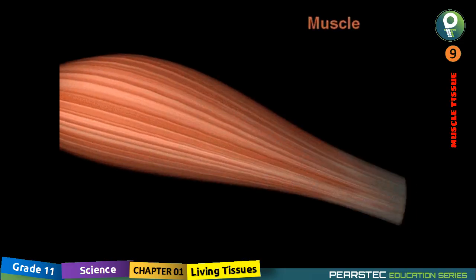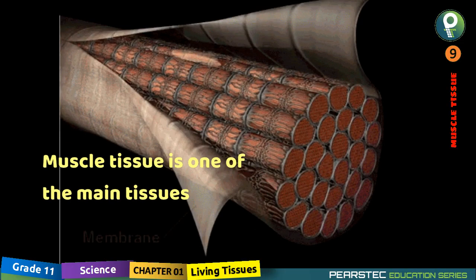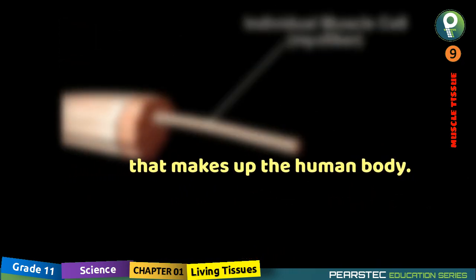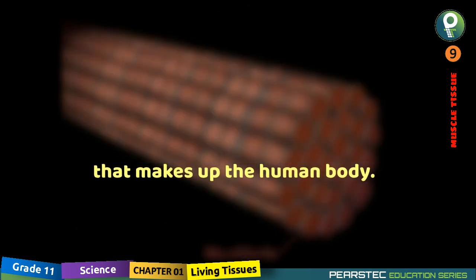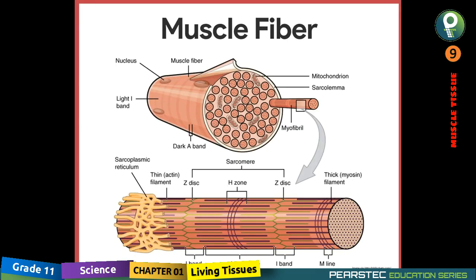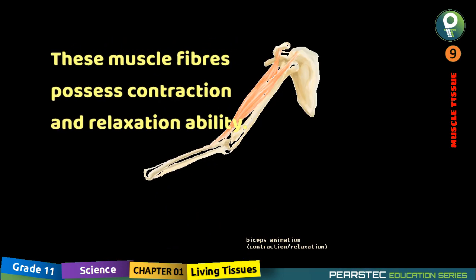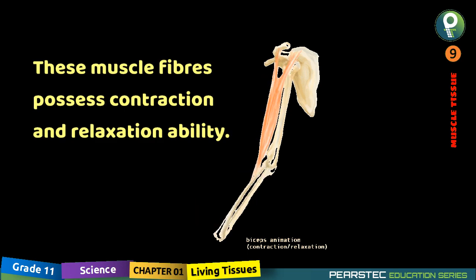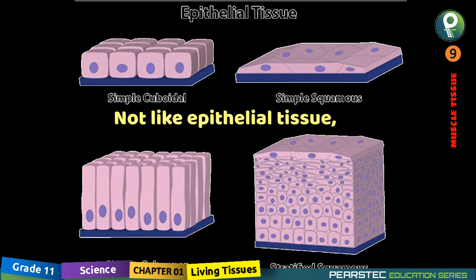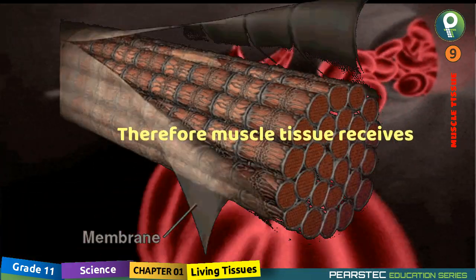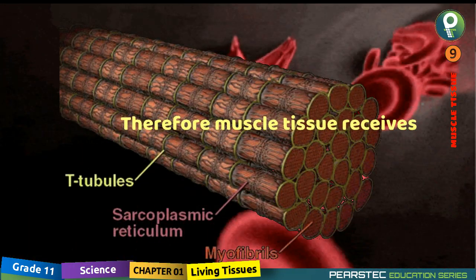Muscle tissue is one of the main tissues that makes up the human body. Muscle tissue is made up of muscle cells, or muscle fibers. These muscle fibers possess contraction and relaxation ability. Unlike epithelial tissue, the muscle tissue possesses a good blood supply, and therefore muscle tissue receives oxygen and nutrients at a high rate.